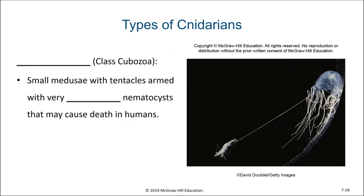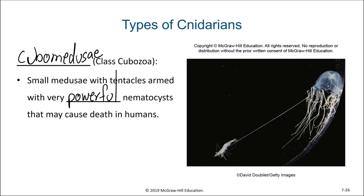The next group of cnidarians are the cubomedusae. They look like scyphozoans, but are typically significantly smaller and usually far more dangerous to humans. The cubomedusae have some of the most powerful stings and could potentially be fatal — either from the toxin they release or by causing a swimmer to faint, pass out, or be unable to swim and therefore drown. These are usually small medusa with tentacles armed with very powerful nematocysts, often so small they can be difficult to see in the seawater, which makes them all the more dangerous.